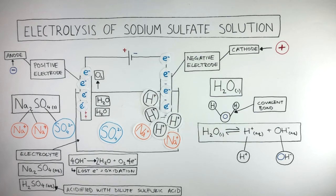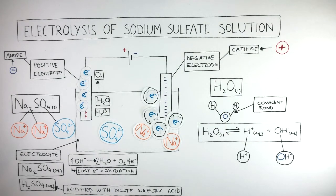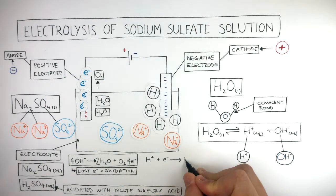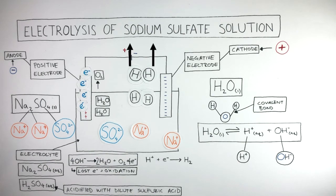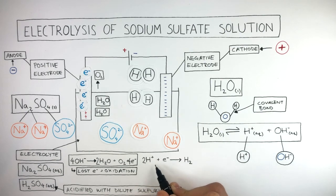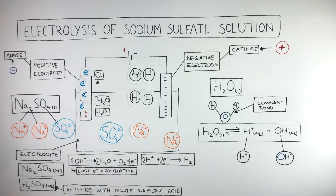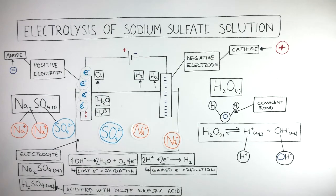At the cathode, each hydrogen cation gains one electron. We can show what happens at the cathode using a half equation: H+ + e- forms H2 molecules which rise up as hydrogen gas. To balance the half equation, there are two hydrogen atoms on the right and one on the left, so we put a 2 in front of the hydrogen ion. We now need to balance the charge — the two hydrogen ions means there's a charge of 2+, so we put a 2 in front of the electron. The hydrogen ions have gained electrons so reduction has taken place.